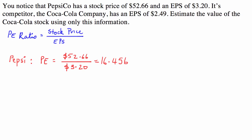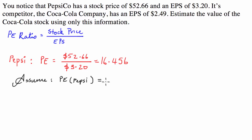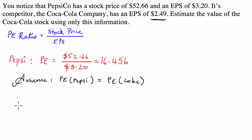So what we're going to do — and this is the assumption that we make in a situation like this — we're going to assume that the P/E of Pepsi is going to be equal to the P/E of Coke. So if we assume that companies in the same space have the same price-earnings ratios, we know the earnings of Coca-Cola.